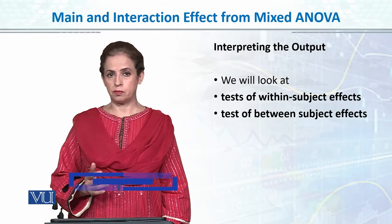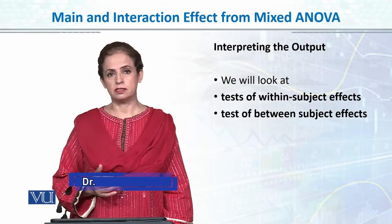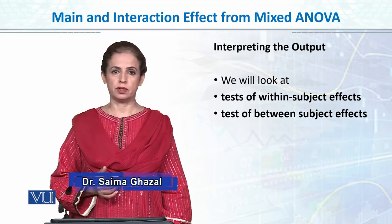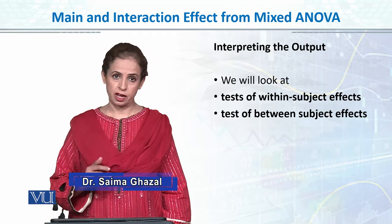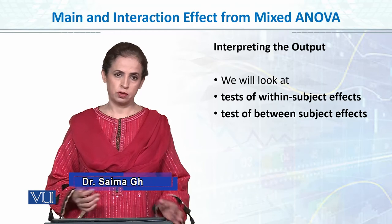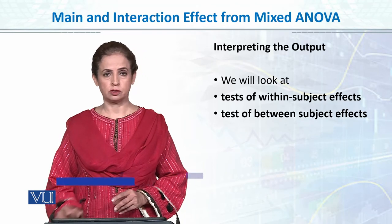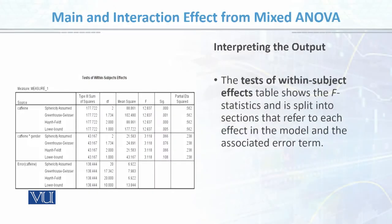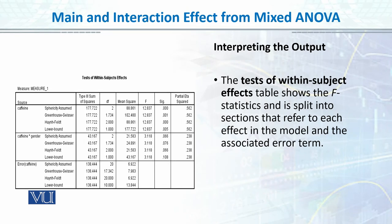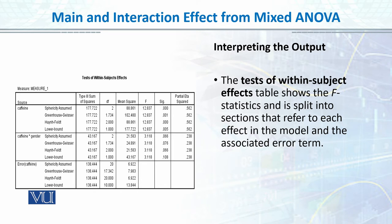After descriptives and looking at the assumptions that are met, the tables are in the main output file. They are in the test of between-subjects and test of within-subjects tables. For the test of within-subject effects, the F-value is split into sections that differ for each effect in the model and its associated error term.